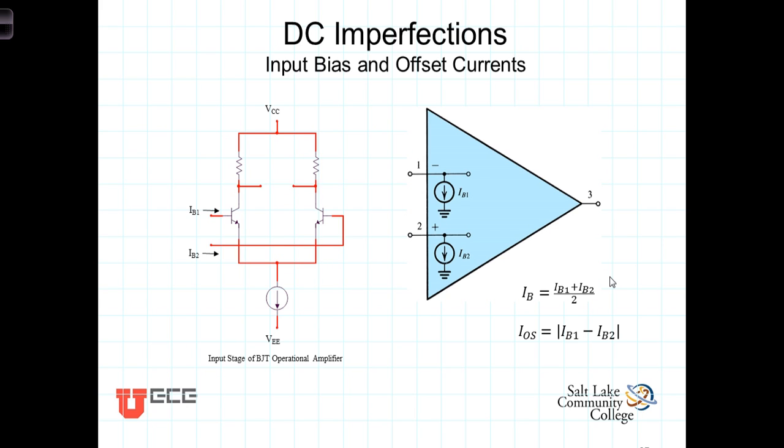A second type of DC imperfection that we need to be aware of arises from bias currents associated with the transistors in the input stage of the op amp.